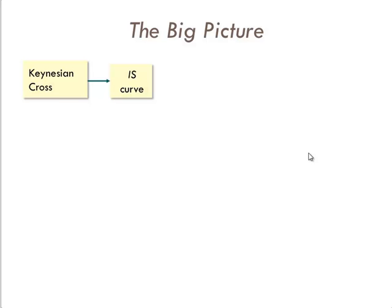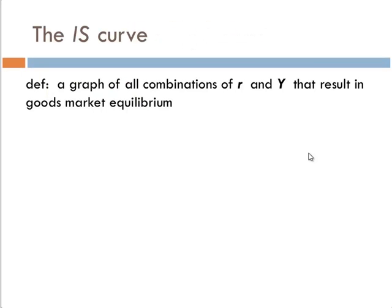By the end of this lecture I'm going to say that like 500 times and you're going to be really annoyed with it. But believe me, it's important. IS curve: a graph of all combinations of interest and income that result in the goods markets clearing. This is an important definition that it will be very hard to pass the test if you don't remember.